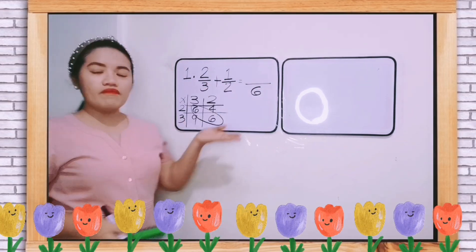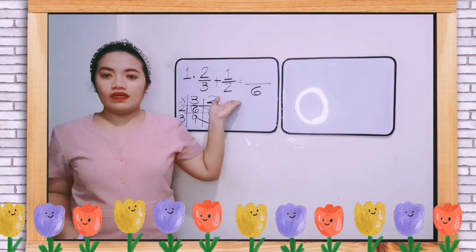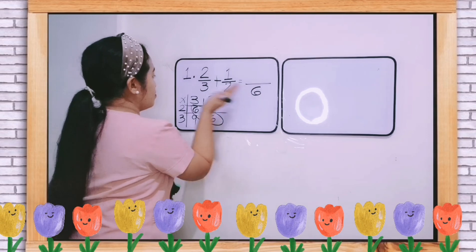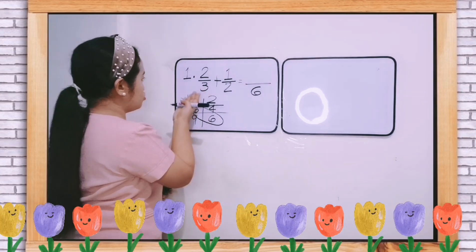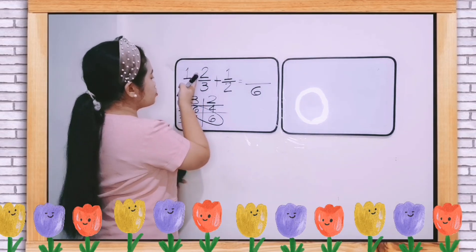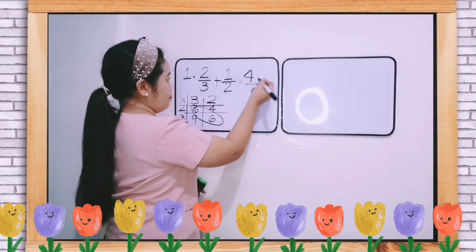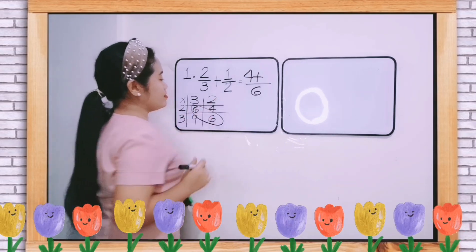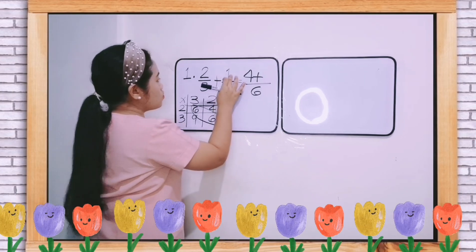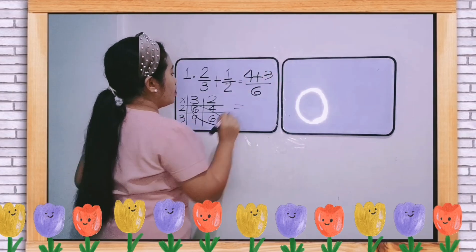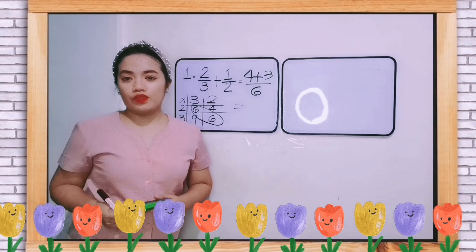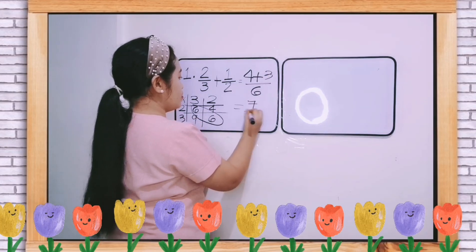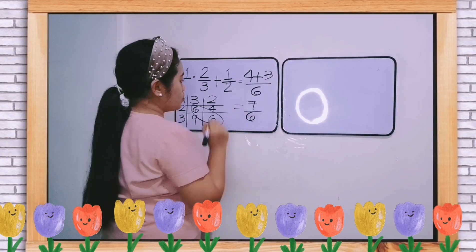Then we will divide the LCD by the original denominator. 6 divided by 3 is 2. 2 times 2 is 4. Plus 6 divided by 2 is 3. 3 times 1 is 3. Now, we can add our numerators. 4 plus 3 is 7. Copy the denominator, which is 6.